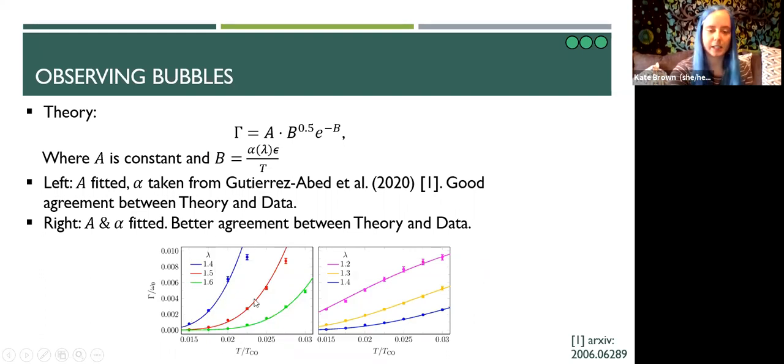These points here were generated from our simulations, whereas the solid lines show the theoretical curves generated using a fitted value of A. These theoretical curves here use the values of alpha taken from this recent paper, but we fit the value of A. We see relatively good agreement between theory and data here, particularly when the predicted values of capital gamma are lower. This plot on the right shows the relationship between capital gamma and temperature for some lower barrier heights. We see here that as we decrease lambda, the curves of capital gamma change from a convex shape to a concave shape. And now these curves show better agreement between theory and data, but this is because we've now fitted both capital A and also alpha.